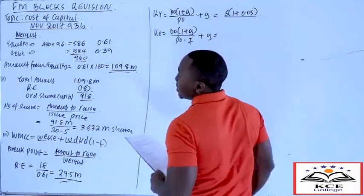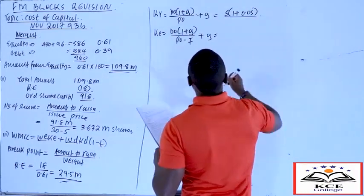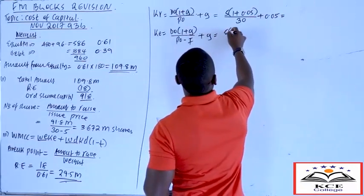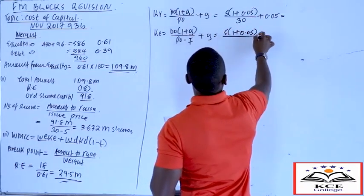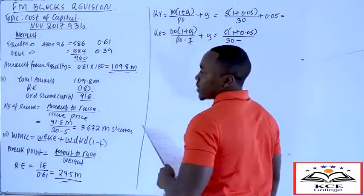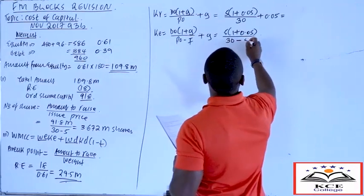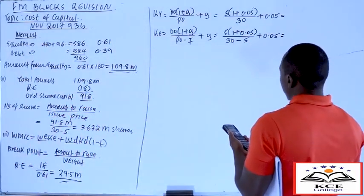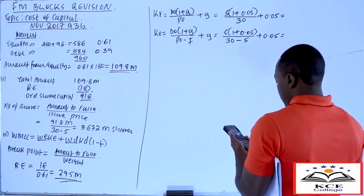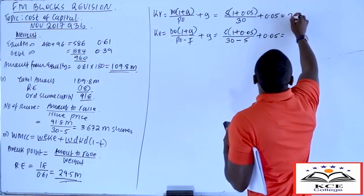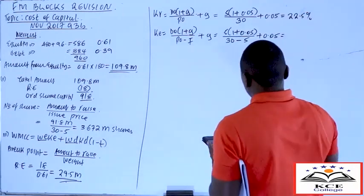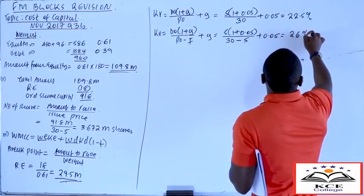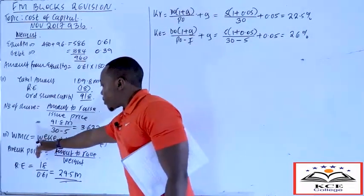P₀ (market price per share) is 30 shillings (note 2). Cost of retained earnings = 5 × 1.05 / 30 + 0.05 = 22.5%. For ordinary shares, the flotation cost of 5 is deducted: cost of ordinary shares = 5 × 1.05 / (30 − 5) + 0.05 = 5.25 / 25 + 0.05 = 26%. We now have both costs of equity.